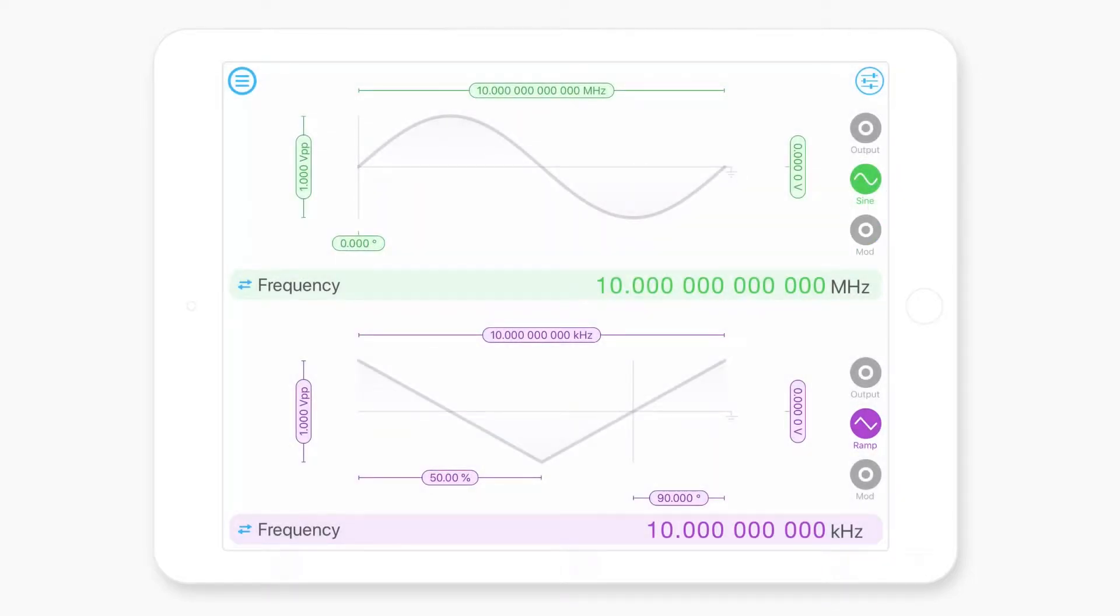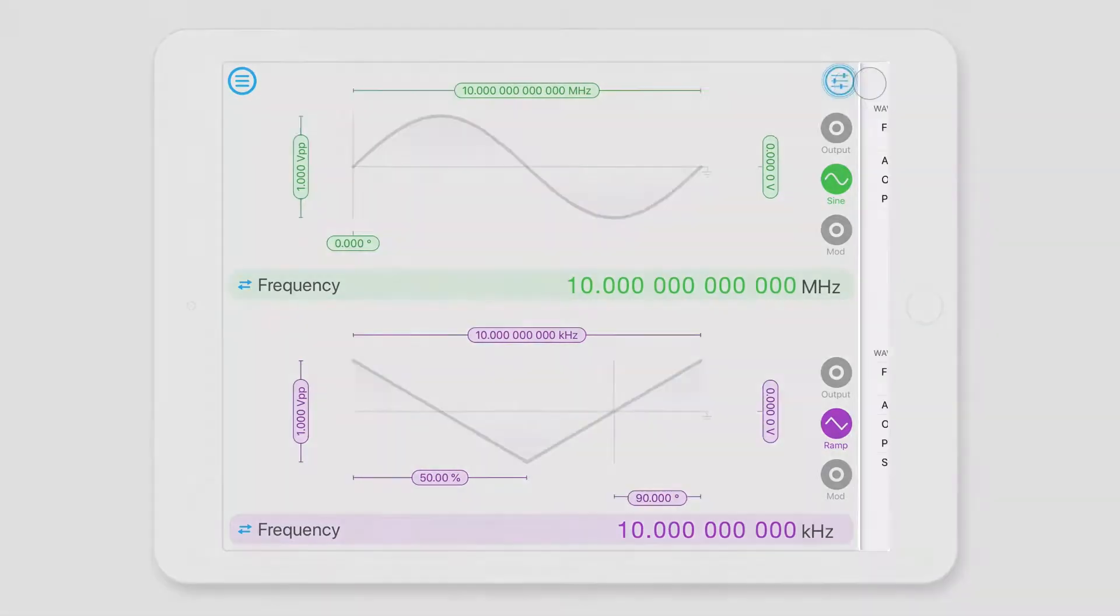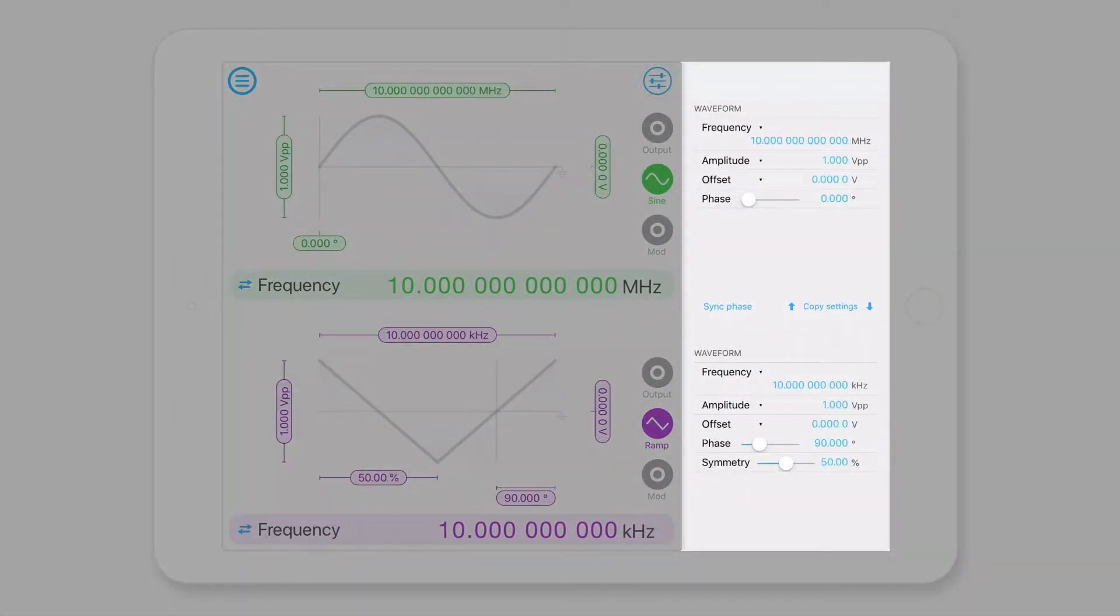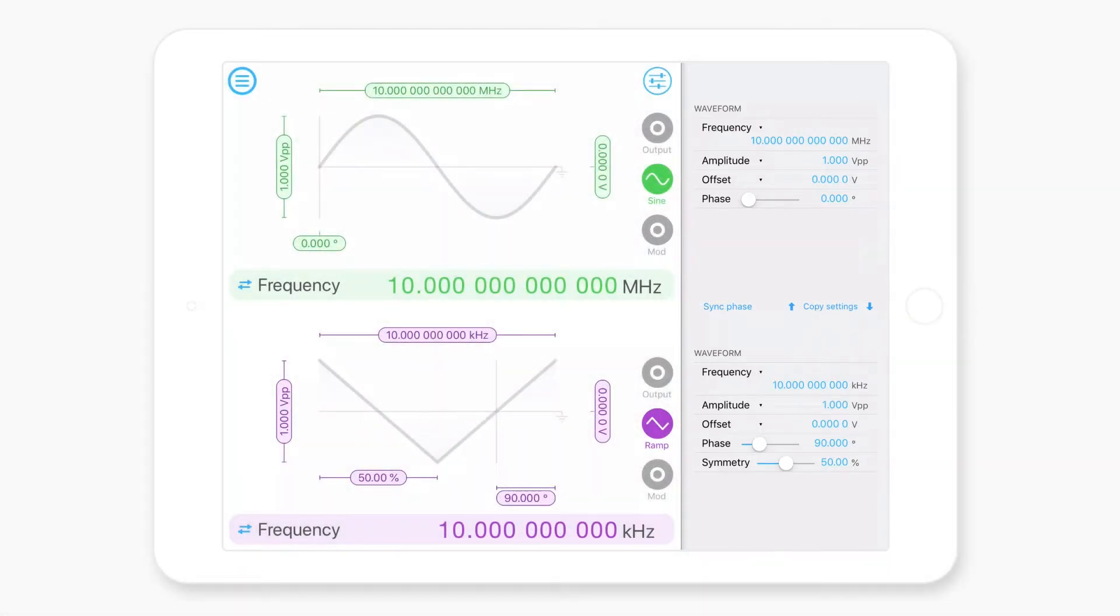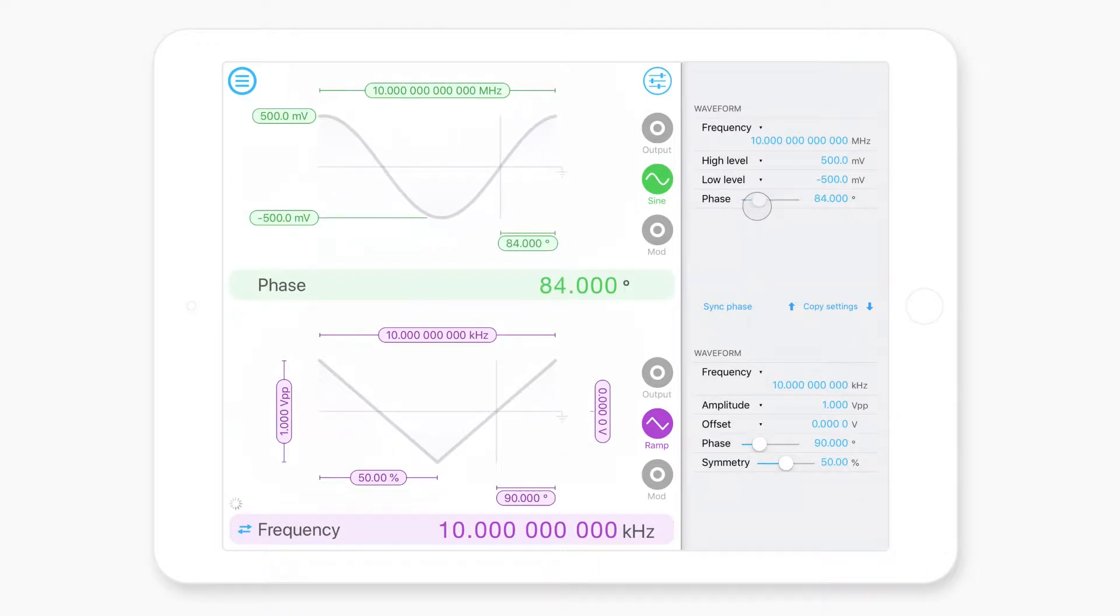We can access all of these parameters from a settings menu on the right. This is where you can set the frequency amplitude offset phase of your waveforms. But you can also quickly select between alternate units. So we might want to characterize the high level and low level voltages of the signal. We might want to specify the waveform period instead of frequency. And we might want to be able to quickly adjust the phase using this little slider here.